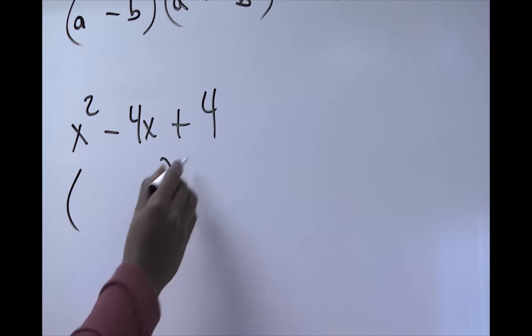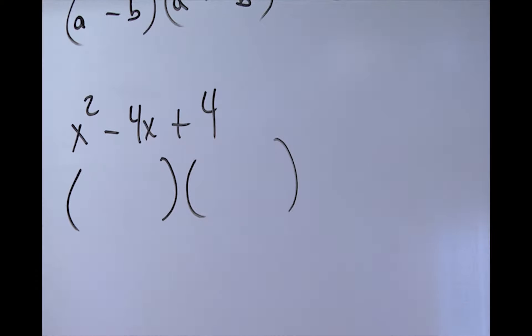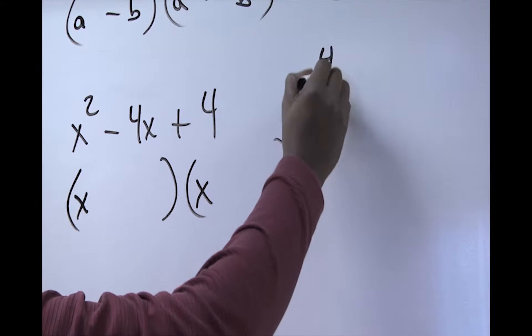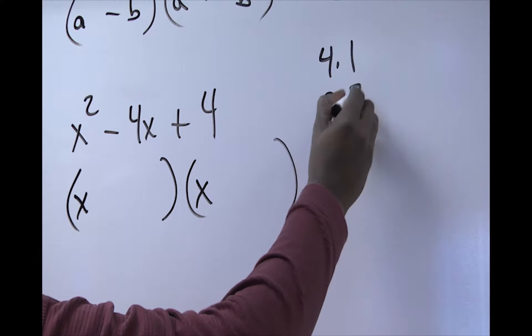we have the second steps: two sets of parentheses. And then you factor the first term. Always look for that common. And that will give us x times x. And your 4. Now, 4 has two sets of factors. We have 4 times 1, and we also have 2 times 2.